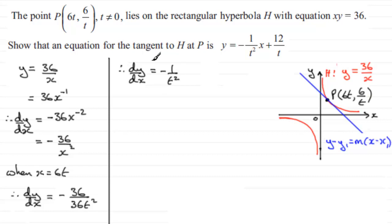This is actually a standard result for finding the gradient at any point on a rectangular hyperbola. It's always equal to minus 1 over t squared. Now that we have this gradient, we're in a position to find the equation of the tangent at P.